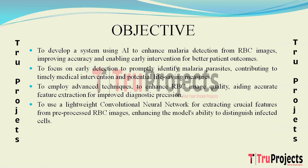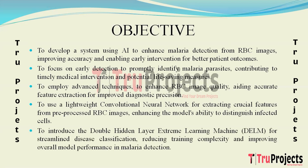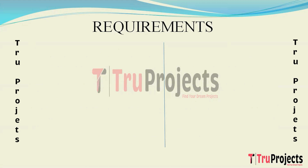The aim is to utilize a lightweight convolutional neural network (CNN) to extract relevant features from pre-processed RBC images, enhancing the model's ability to distinguish between infected and uninfected cells. Another objective is to introduce and implement the Double Hidden Layer Extreme Learning Machine (DELM) for efficient and effective disease classification, reducing training complexity and enhancing overall model performance.